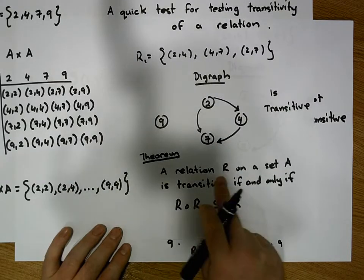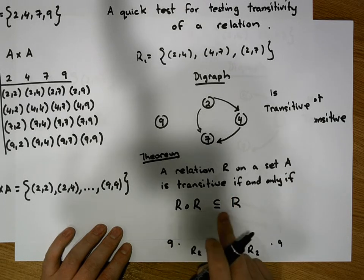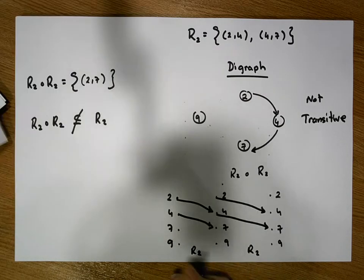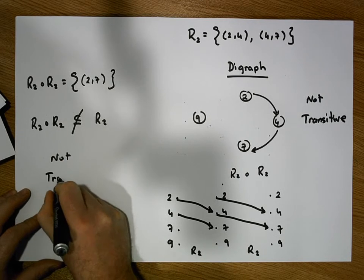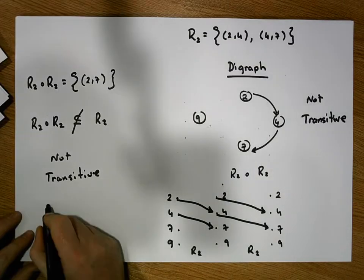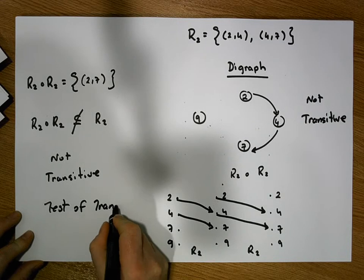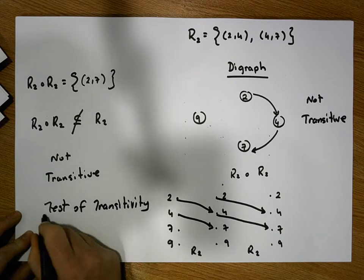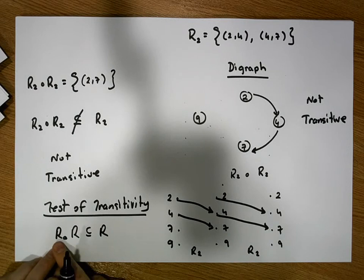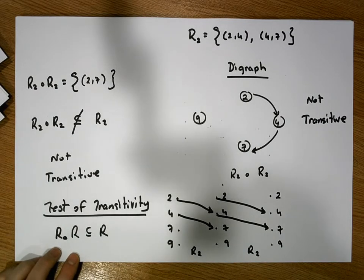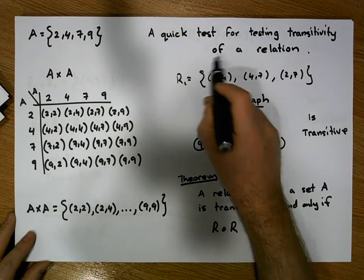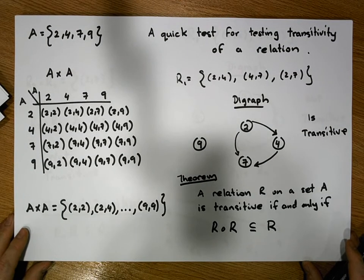From the theorem — a relation R on a set A is transitive if and only if R after R is a subset of R — since R2 after R2 is not a subset of R2, R2 is not transitive. This test of transitivity, where we compose the relation with itself and check if the result is a subset of the original, is a quicker way to test for transitivity.